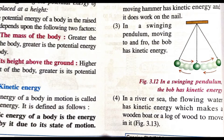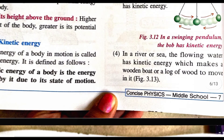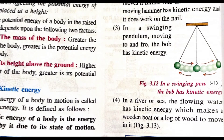In a swinging pendulum, the bob has kinetic energy. When the ball is at rest at the highest point, it has potential energy. When it starts to move, the kinetic energy causes the to-and-fro motion. In a river or sea, the flowing water has kinetic energy which makes a wooden boat or a piece of wood move in it.